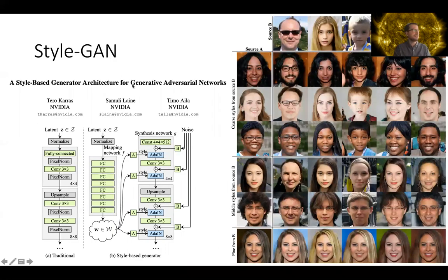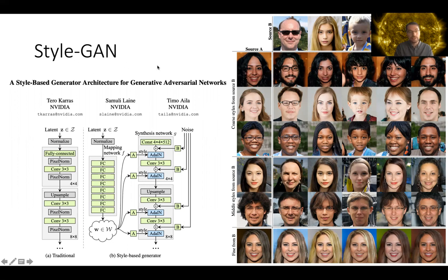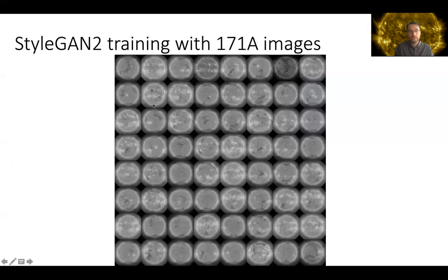After the PGGAN, we tried the so-called StyleGAN, which has become very popular in the last two years. The idea is that there are style features in your image set that can be distinguished. Different features can be applied to source images and the style morphs together. Regardless of this aspect, the image quality is also much higher in StyleGAN, and now there is the advanced version StyleGAN2. We trained StyleGAN2 on the 171 AIA images with a parallel architecture, and the image quality has improved more while the overall diversity of the distribution is preserved.